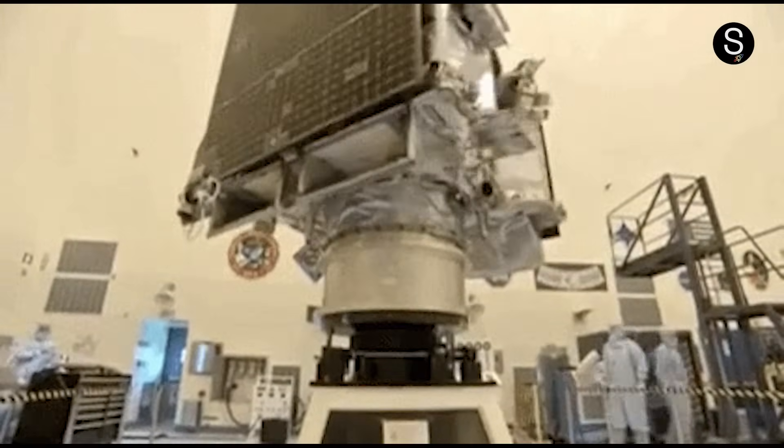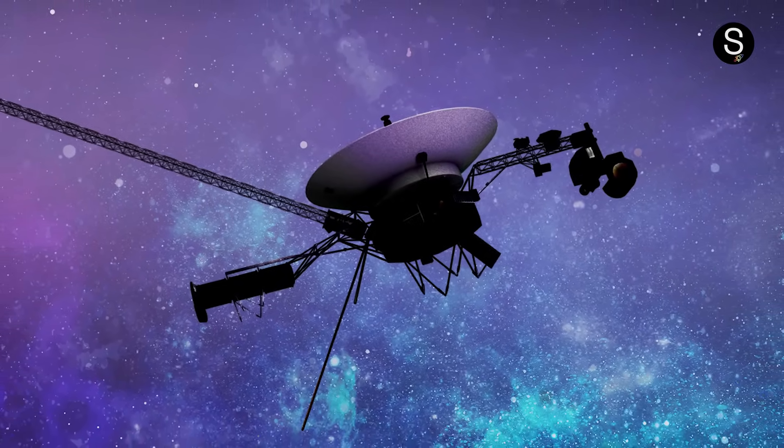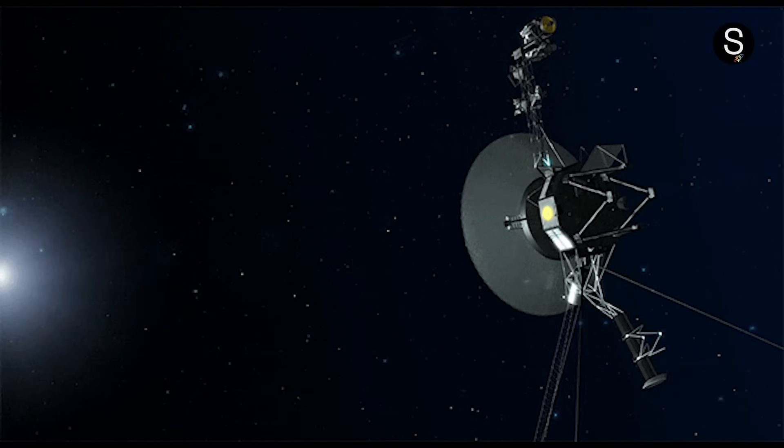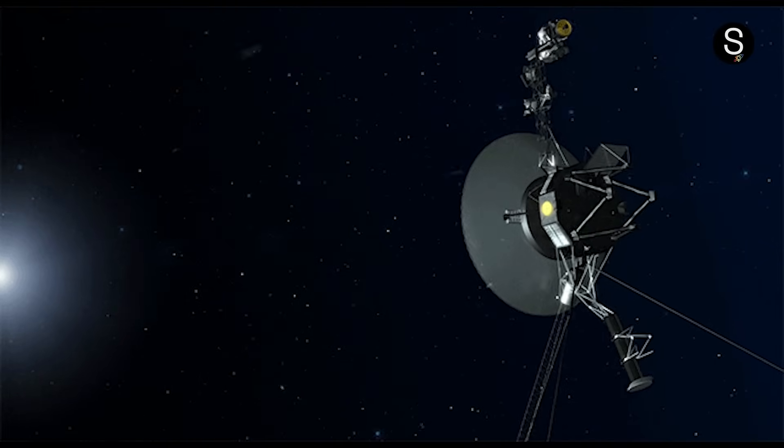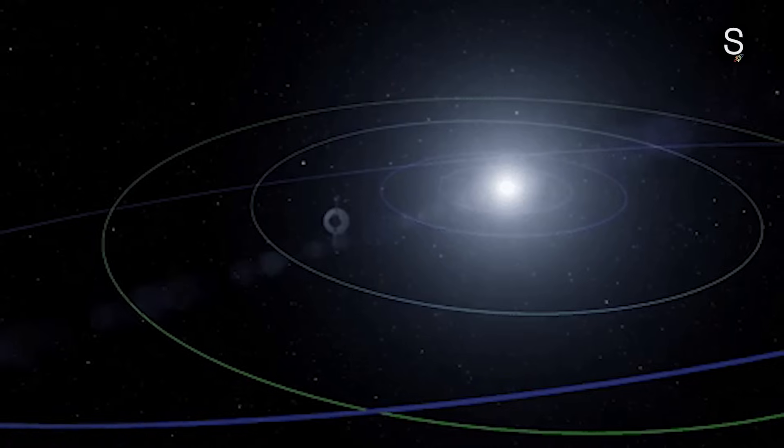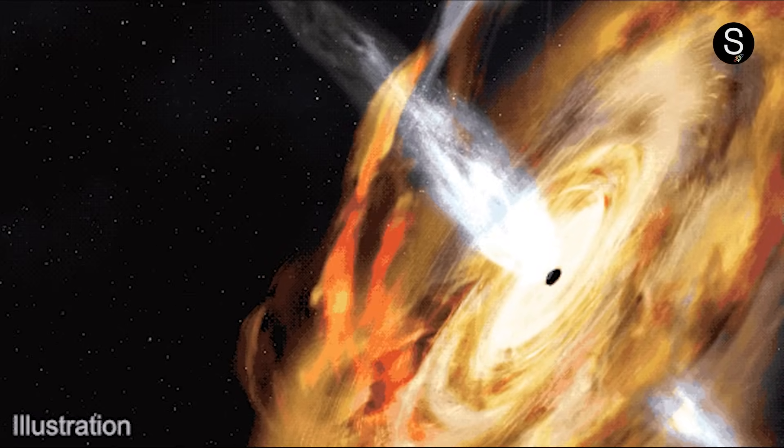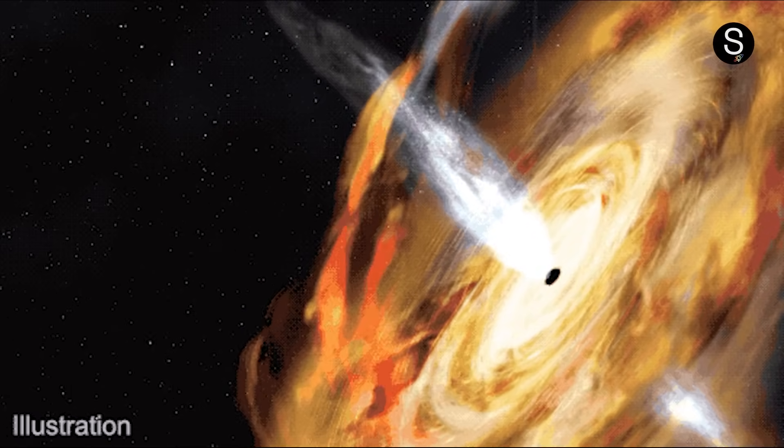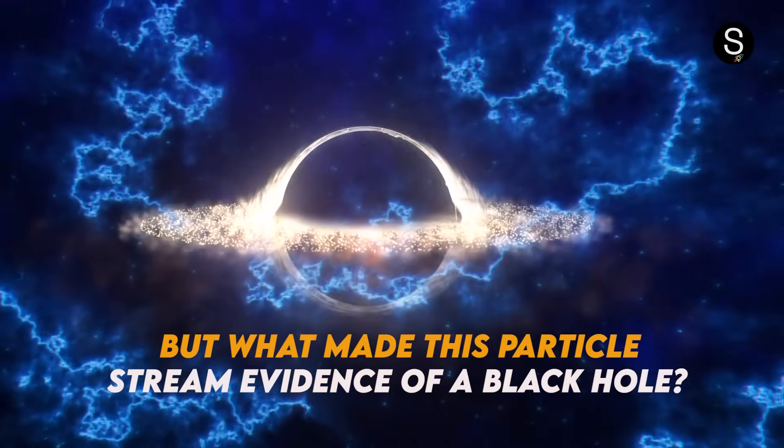Voyager 1 was outfitted with scientific equipment known as the LECP Low-Energy Charged Particle. This apparatus was designed to detect and quantify charged particles in space such as protons, electrons, and ions. The LECP instrument detected a significant increase in the number of high-energy particles as Voyager 1 crossed the boundary of our solar system and entered interstellar space.